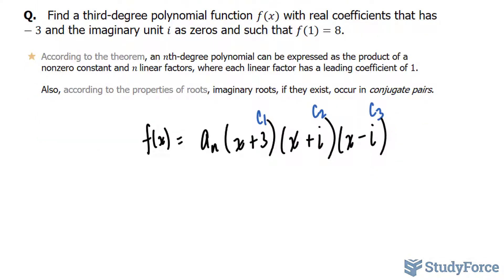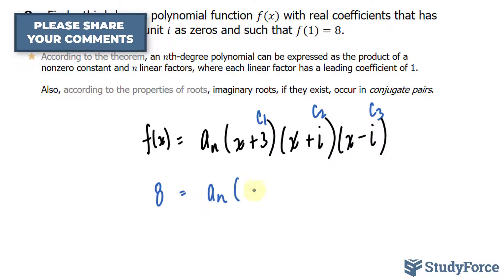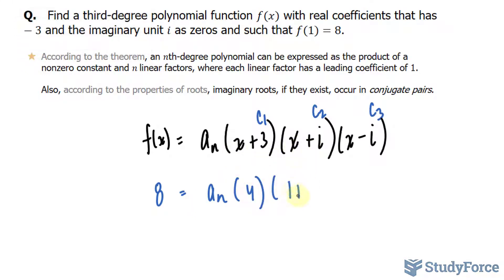The next step is to expand what we see on the right side, and at this time you can also substitute 8 into f(x) and 1 into the x's. Let's go ahead and do that. We have 8 = a_n, (1 + 3) is 4, (1 + i), and (1 - i).